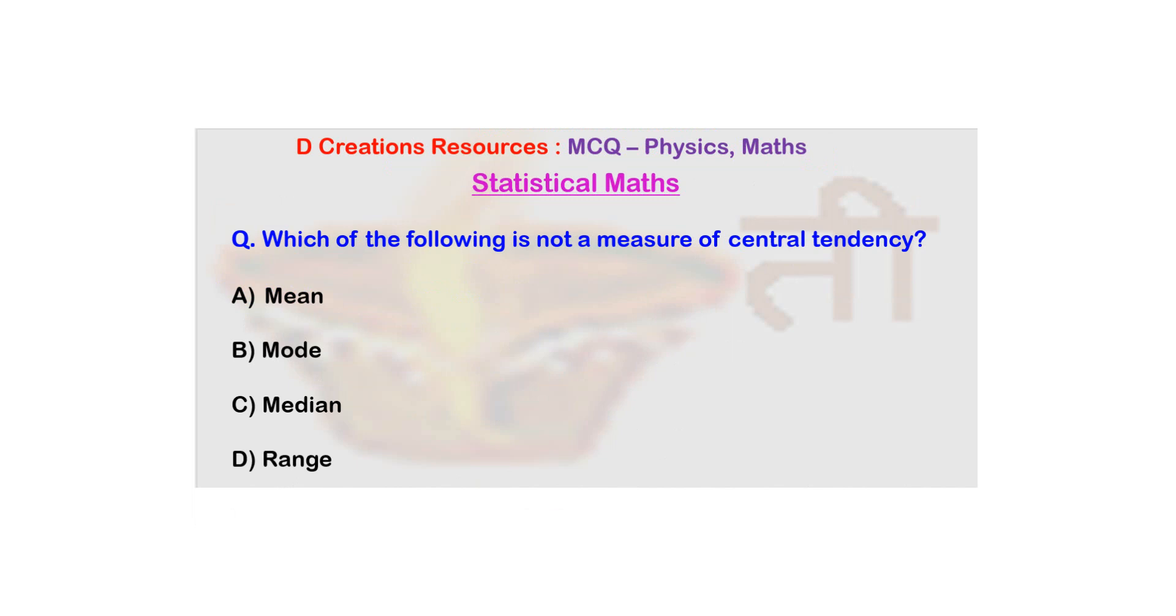Which one of them is not a measure of central tendency? Just now we saw that all the three, mean, mode, as well as median have been the measures of central tendency. So the only one remaining is range, and range is not a measure of central tendency. Thank you.